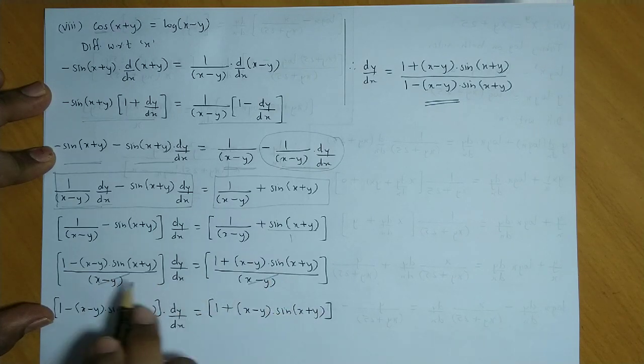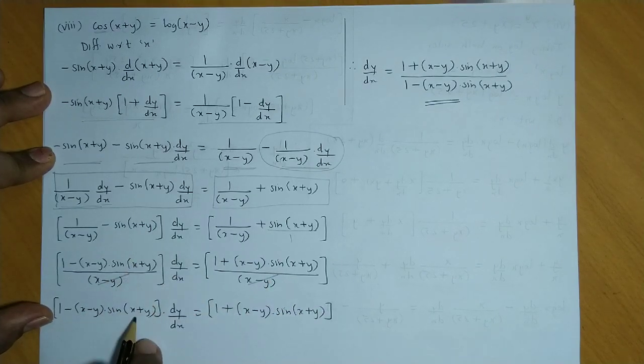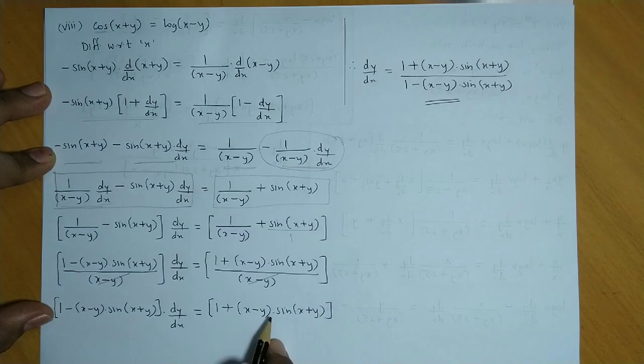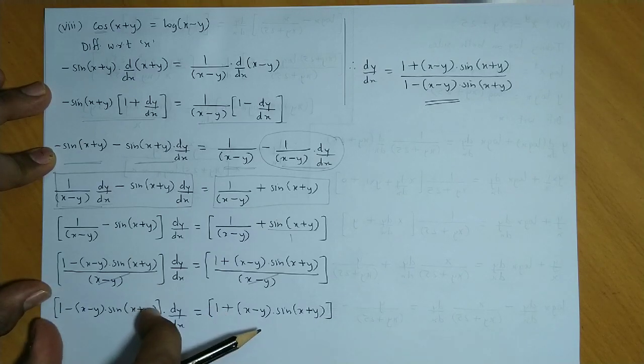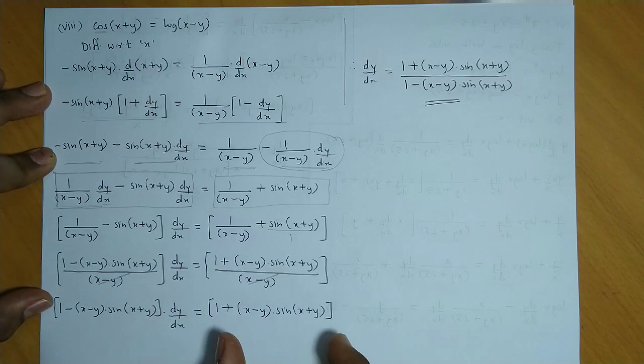Then we write down the remaining terms. So finally, we need the value of dy by dx. So dy by dx would be the right hand side as it is, and this factor comes in the denominator.